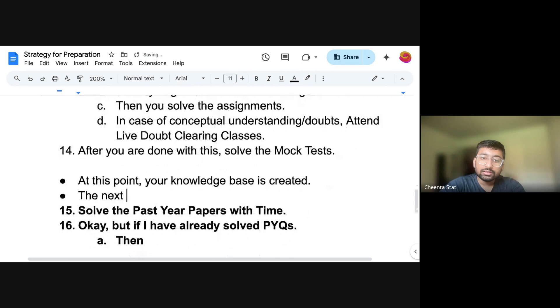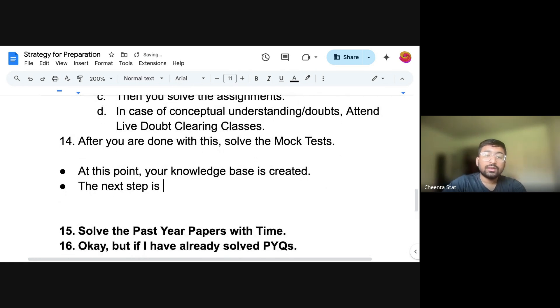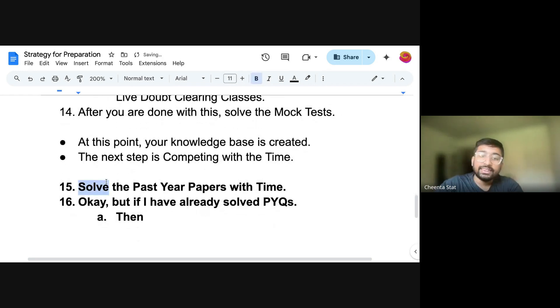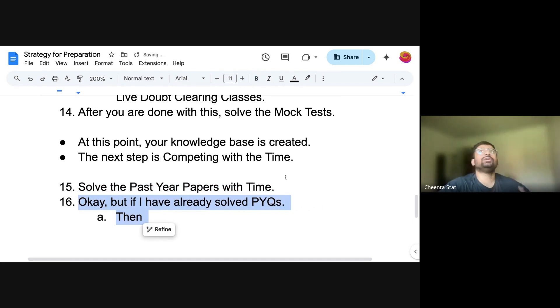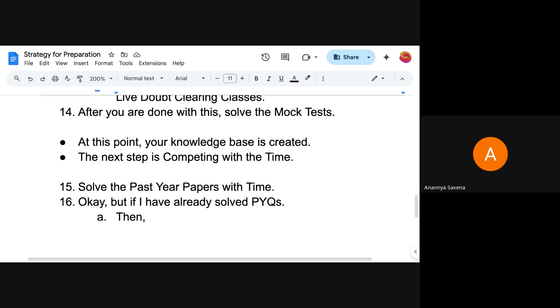The next step is competing with the time. First knowledge and then time. Two dimensions are there. Very important. First knowledge and then time. So when you are done with the knowledge, the next step is competing with the time. And then you solve the problems with time. Now you can solve it, let's say IIT, I am trying to solve IIT questions under three hours. So you can say, okay, I have already solved it. Your goal is to solve it under time.